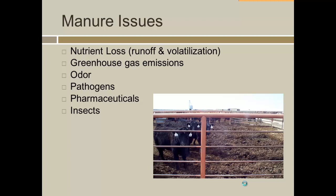Pharmaceuticals are a new kind of emerging issue with manure. We give animals antibiotics to help them survive and grow better. Certainly people ingest a lot of antibiotics and things like that, and we have to understand where these things are going and how they may build up or not build up in the soils.